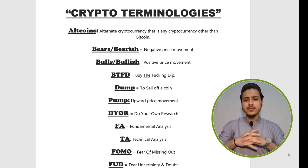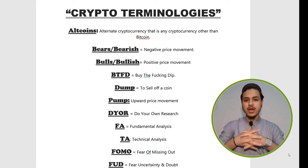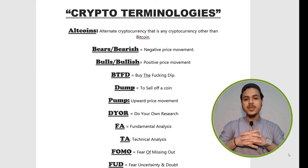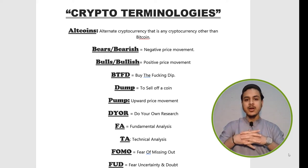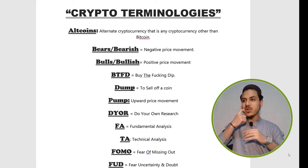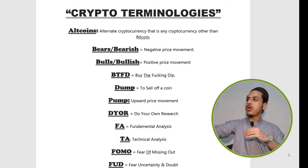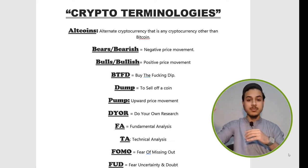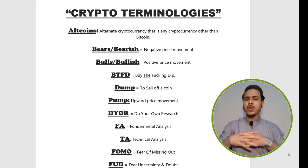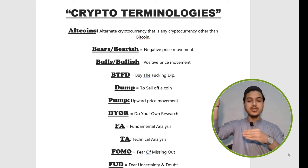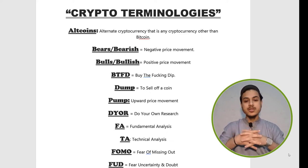BTFD is basically an acronym we use in crypto. BTFD means buy the f***ing dip — meaning don't miss the dip of this coin, do buy it. Dump means to sell off a coin; when a coin is excessively sold, we say that coin is dumped. Pump — clear from its name — when a coin price raises too much, the upward movement of a coin is called a pump.